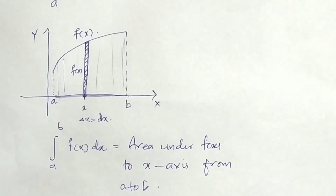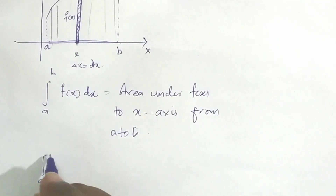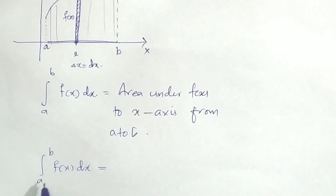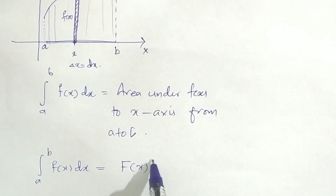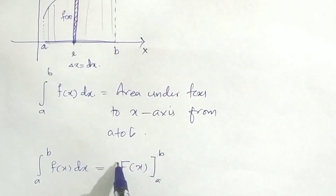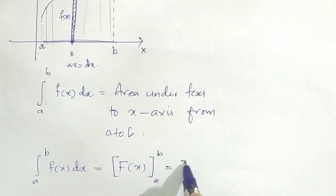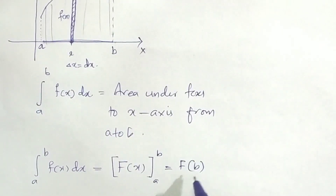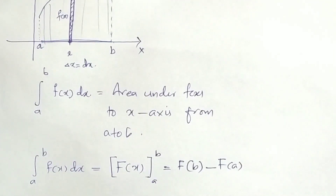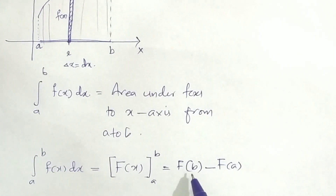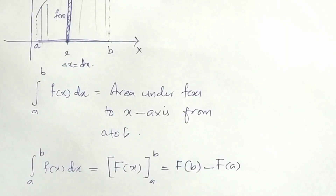This is the definite integral — it represents the area under a curve. To evaluate a definite integral from a to b of f(x) dx: if f(x) has antiderivative capital F(x), then we apply the limits from a to b. The upper limit is b and the lower limit is a, so the result is F(b) minus F(a).